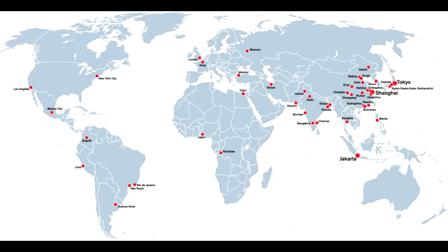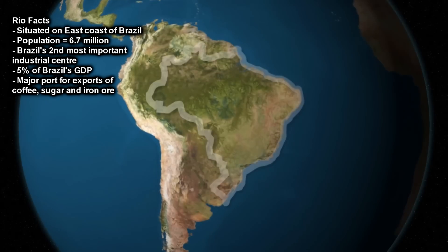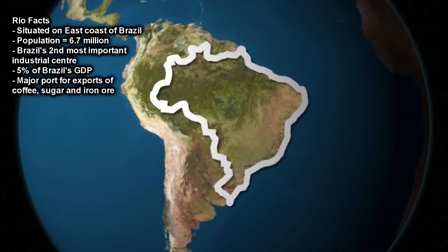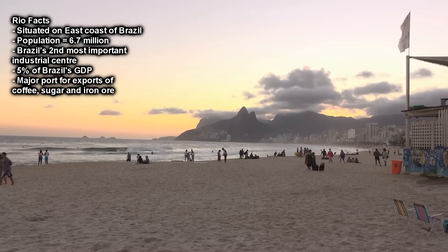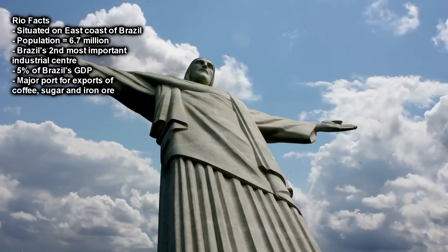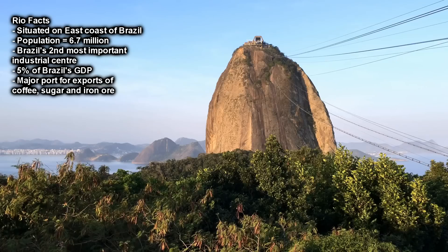All pupils should have looked at an example of an LIC or NEE city across the world, such as Rio de Janeiro in Brazil, Mumbai in India, or Lagos in Nigeria. For each case study you should have a good knowledge of the location of the city as well as some basic facts and stats about the area.